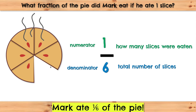Let's figure out what fraction of the pie is still left to eat: one, two, three, four, five. Five out of six total slices. So, five-sixths of the pie is still left to eat.